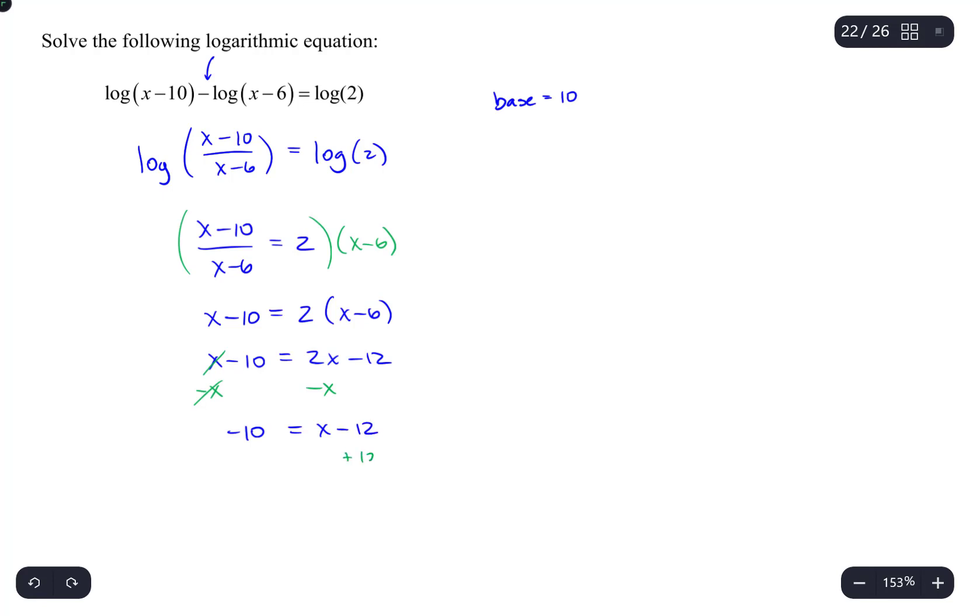And then, I will add 12 to both sides, and that will get x by itself. Negative 10 plus 12 is 2. And that right there is only a potential solution. It's not guaranteed to be a solution until we check to make sure it doesn't lead to a negative argument on any of the original logarithms.